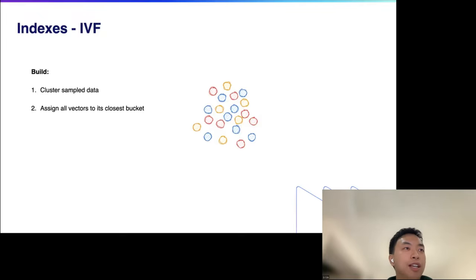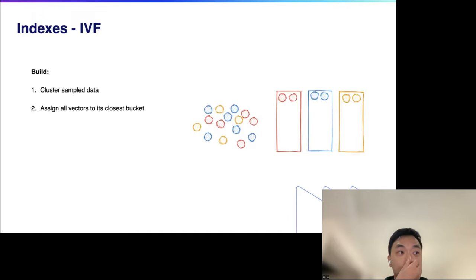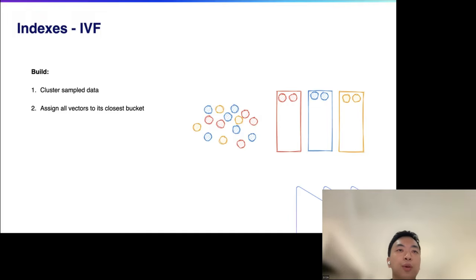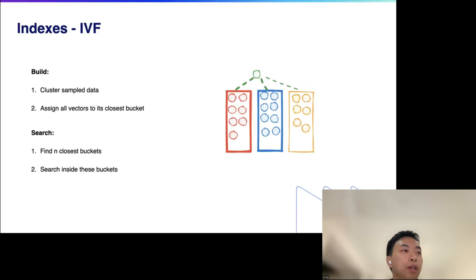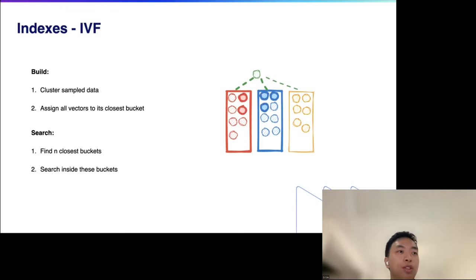Let's start with the classical IVF algorithm. During index building, we sample and cluster the dataset to create buckets — usually with k-means. We then assign each vector into its closest bucket. When searching, we first identify the nearest bucket to the query vector, then search within that bucket for the results we need.